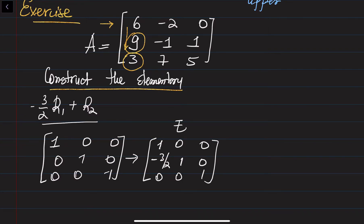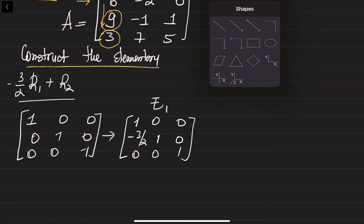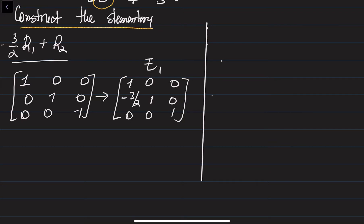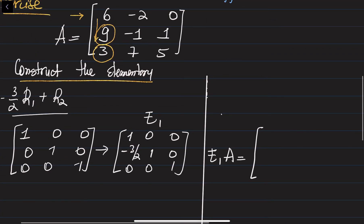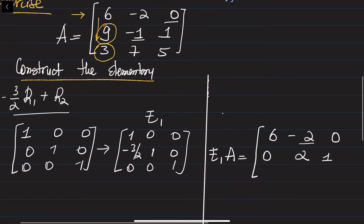If you multiply E1 to A, the 9 is eliminated. The result is [[6, -2, 0], [0, 2, 1], [3, 7, 5]]. Multiplying -2 by -3/2 gives plus 3, and adding that to -1 gives 2. And the third row is copied as is: [3, 7, 5].